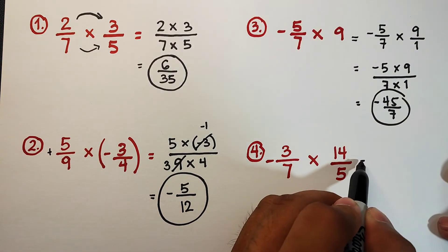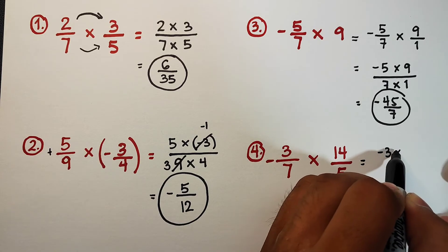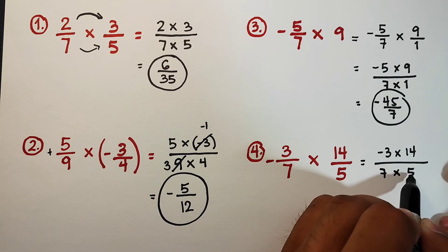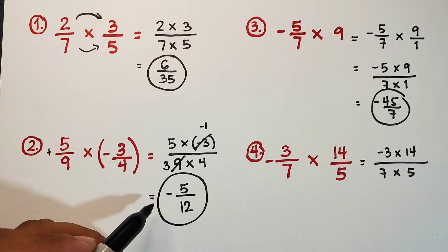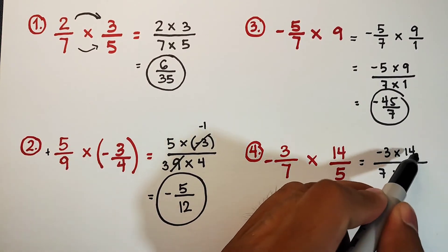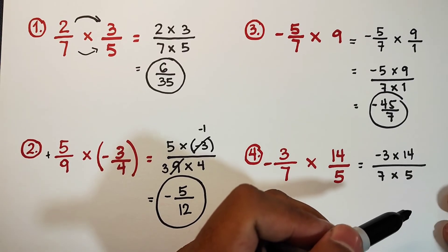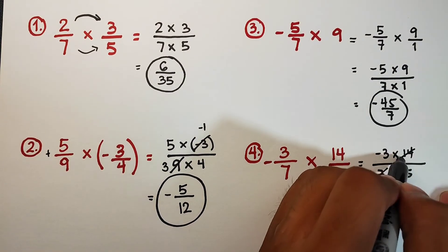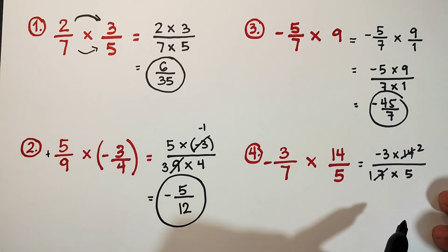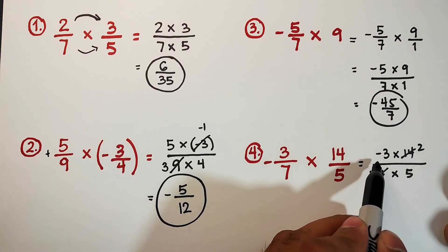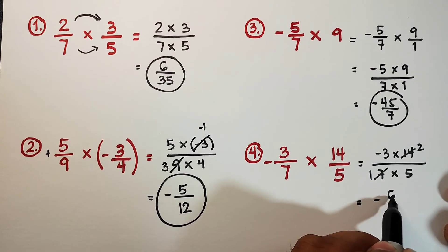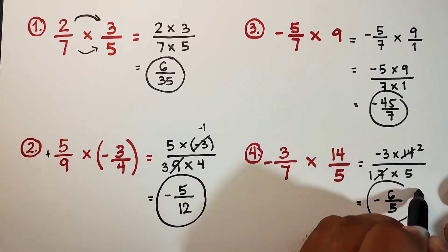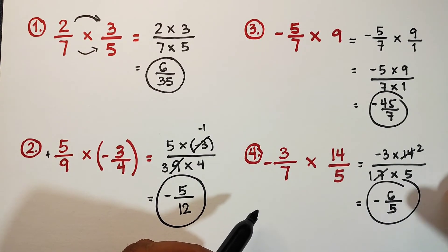Now let's continue with item number four. We have negative three over seven times fourteen over five. Same process: multiply negative three times fourteen over seven times five. We can cancel out seven and fourteen — their GCF is seven — so seven becomes one and fourteen becomes two. We have negative three times two which is negative six, over one times five which is five. The answer is negative six over five.